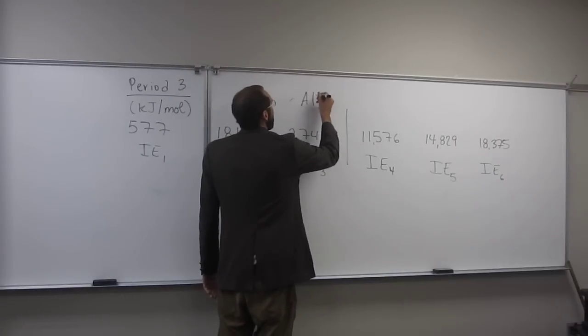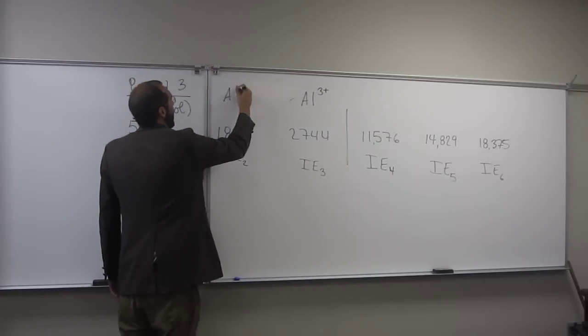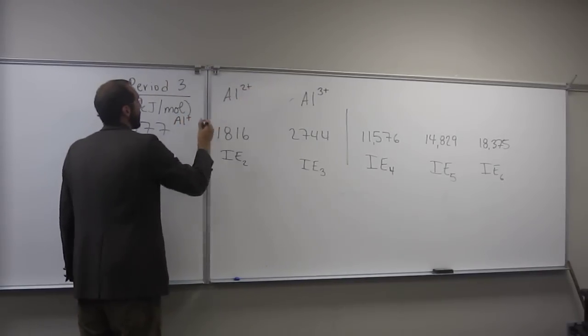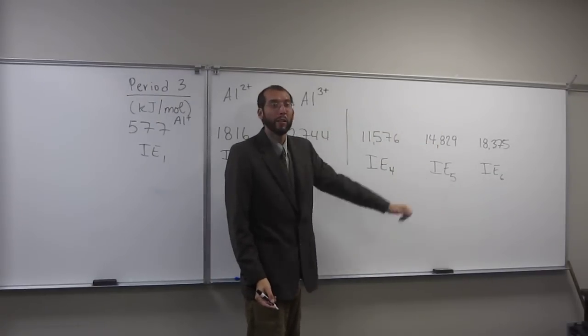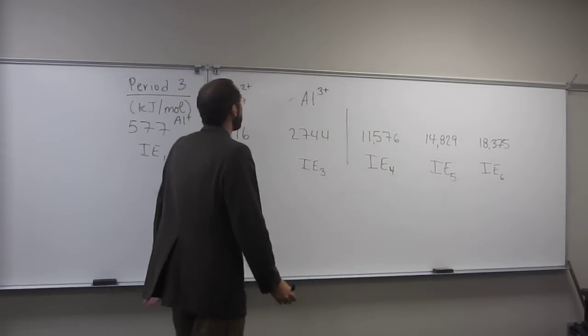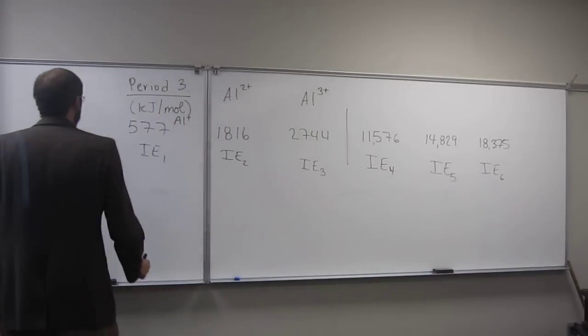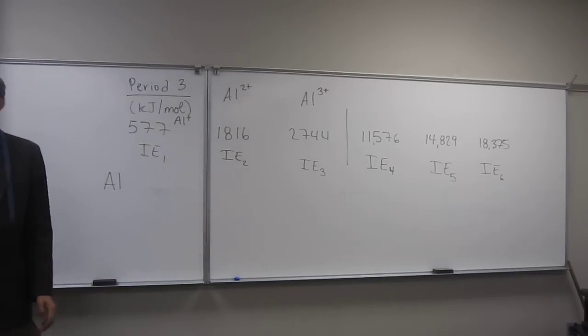So effectively, what we've made here is Al three plus. So this would be like Al two plus, and this would be Al plus. So it takes a lot to make Al four plus. So that ain't gonna happen. So what have we figured out? Well, that the period three element is aluminum. Everybody got that far?